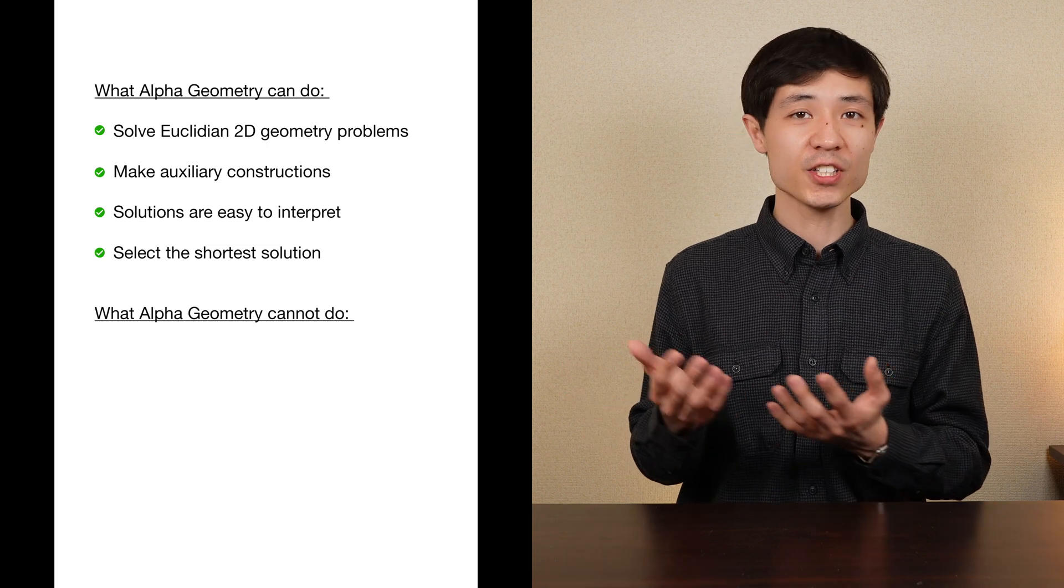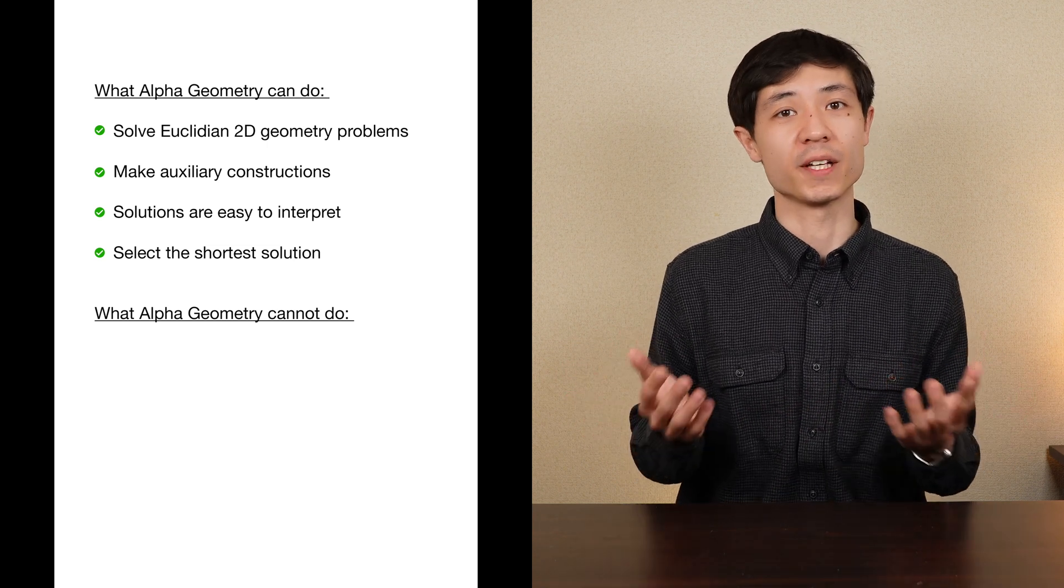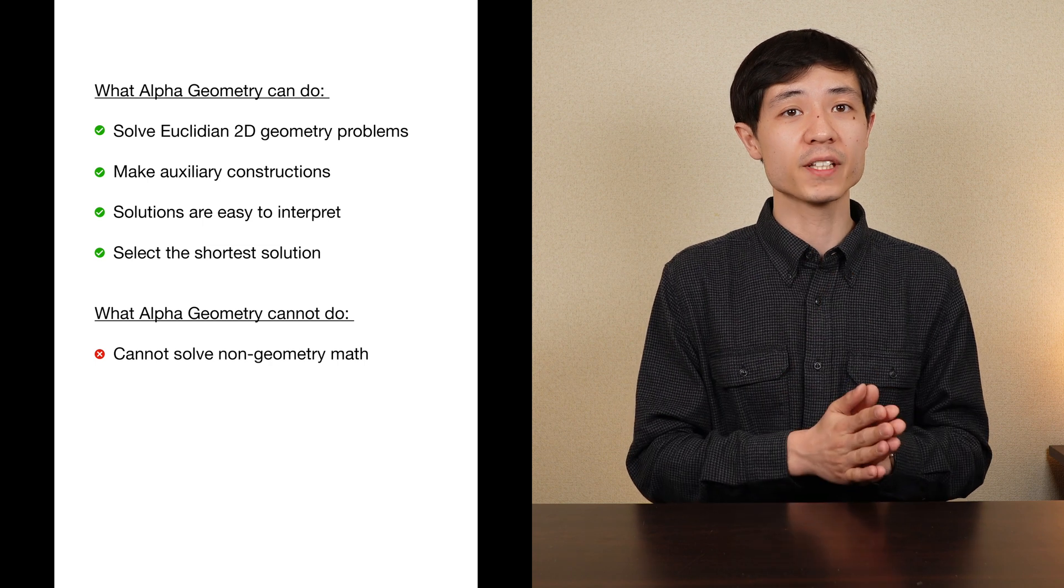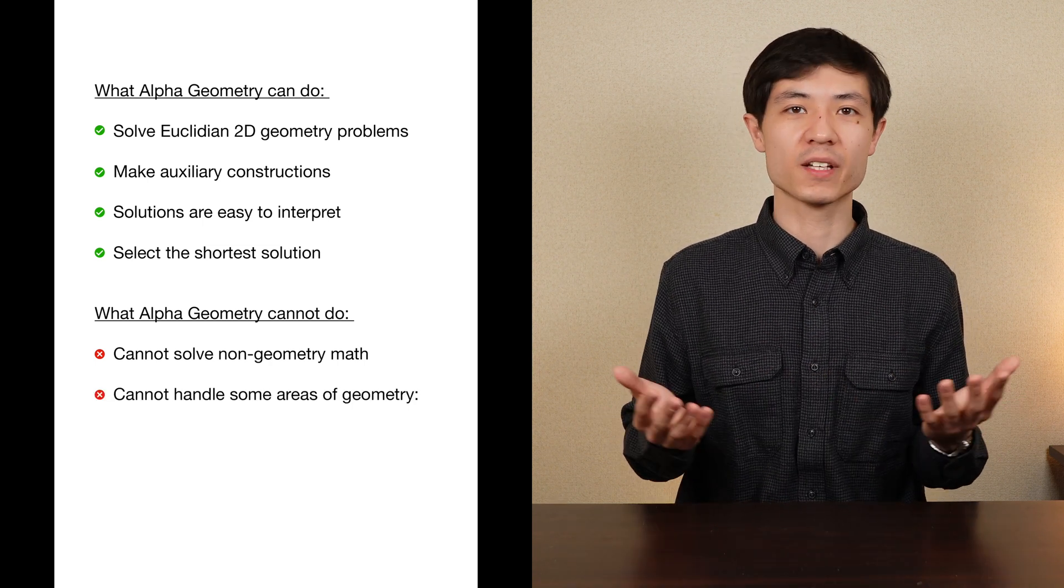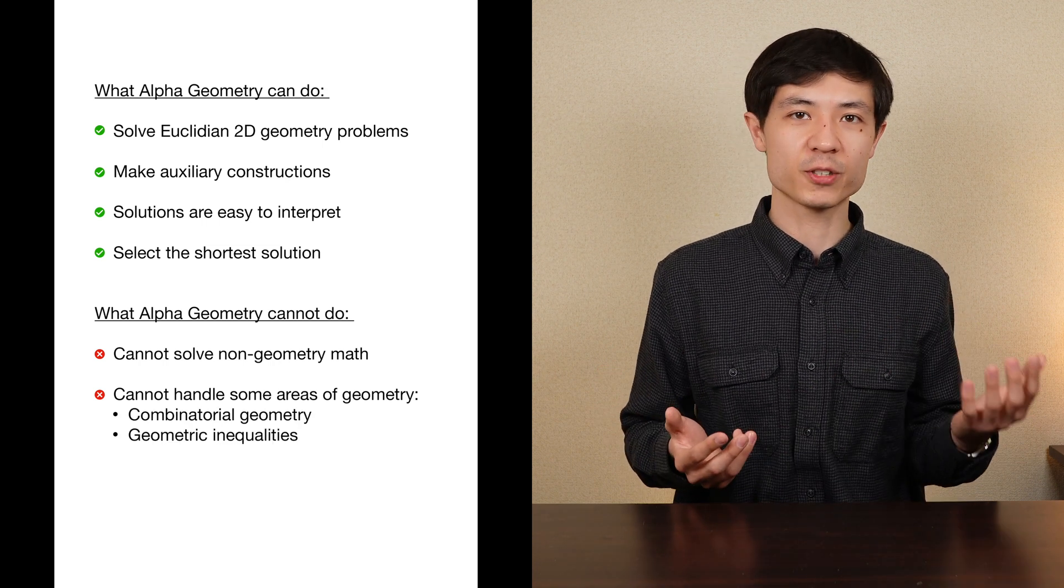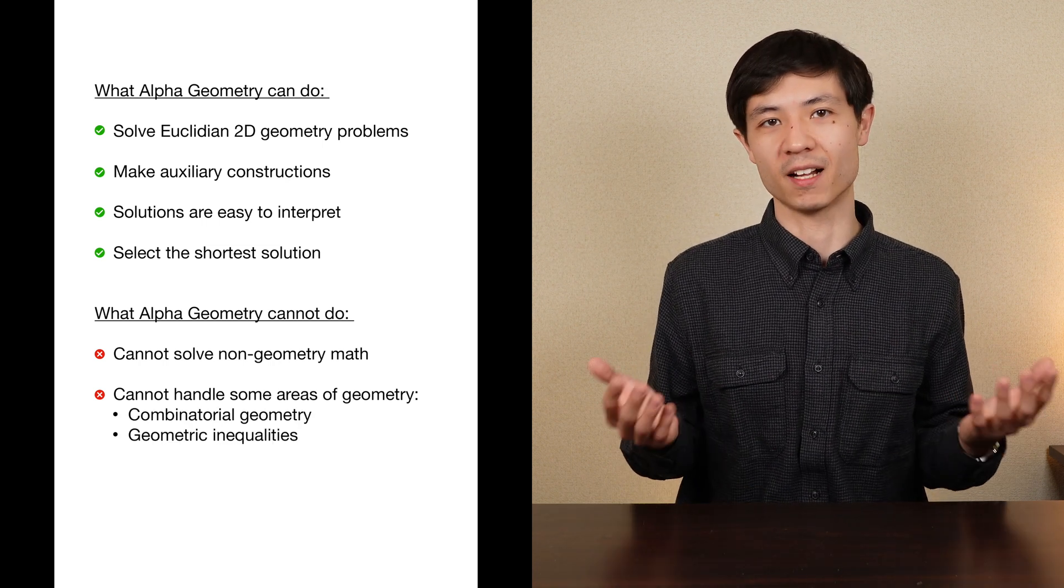On the other hand AlphaGeometry only works for Euclidean plane geometry problems. It does not work for other areas of math like algebra or calculus. Furthermore some areas of geometry like combinatorial geometry or geometric inequalities are not covered by the algorithm.